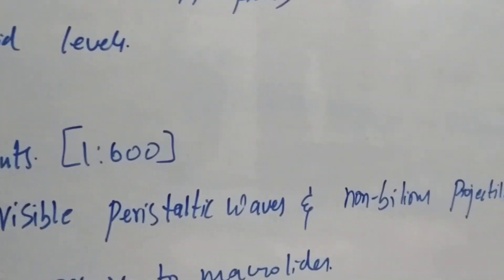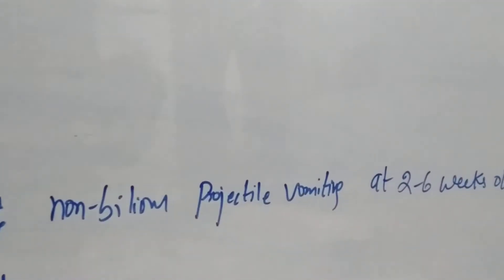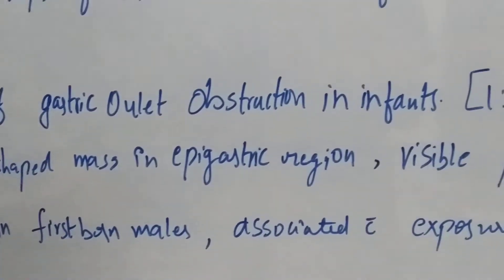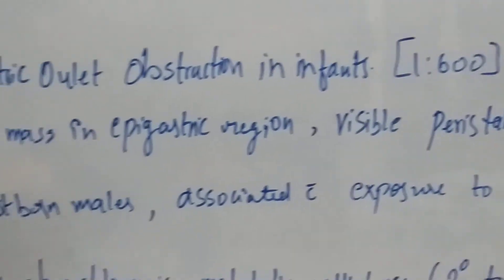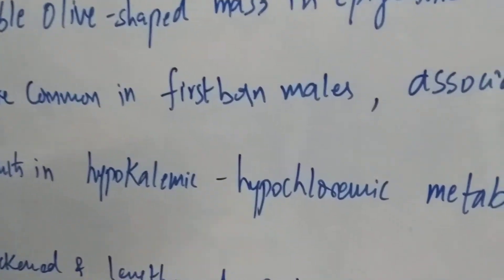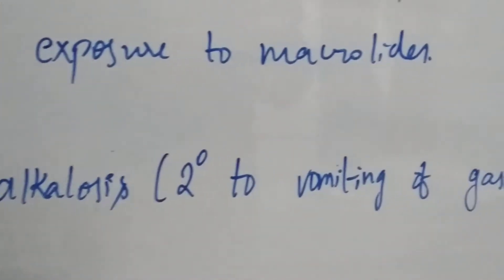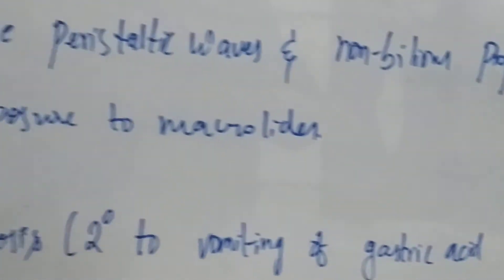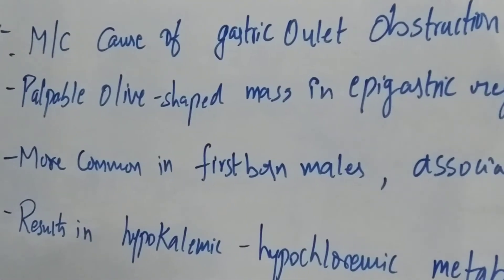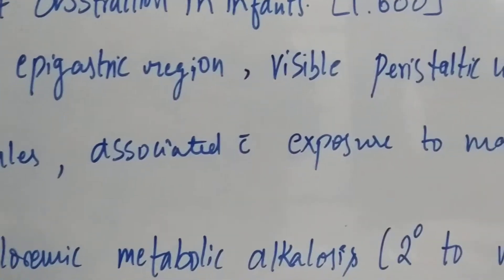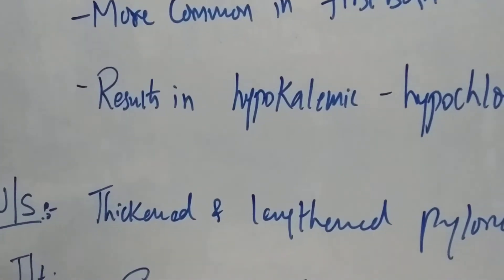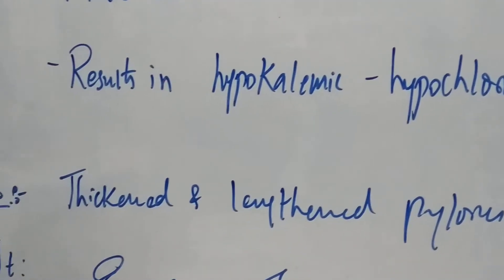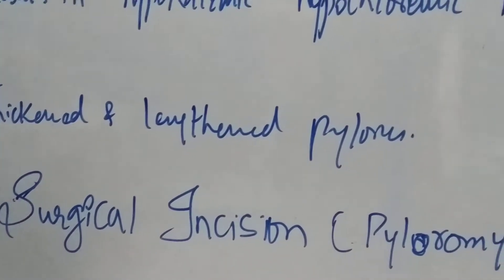Hypertrophic pyloric stenosis is more common in firstborn males and is associated with exposure to macrolides. It results in hypokalemic hypochloremic metabolic alkalosis, secondary to vomiting of gastric acid and subsequent volume contraction. On ultrasound, it appears as a thickened and lengthened pylorus.